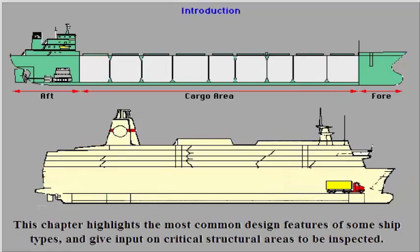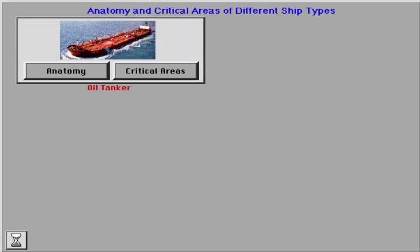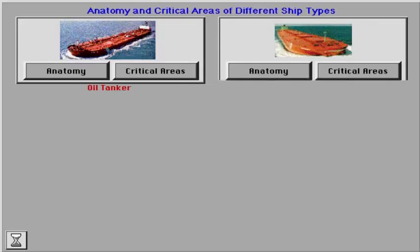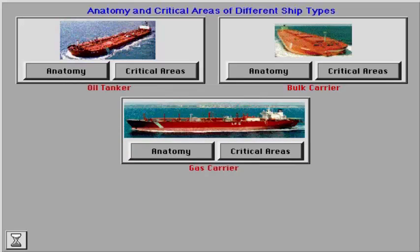This chapter highlights the most common design features of some ship types and gives input on critical structural areas to be inspected. We will now present the anatomy and critical areas of the following ship types: oil tanker, bulk carrier, gas carrier, ferry, and ro-ro.